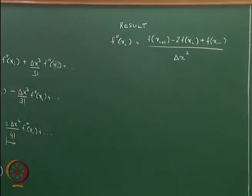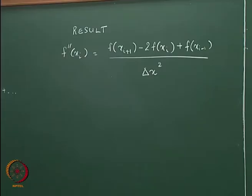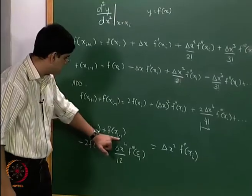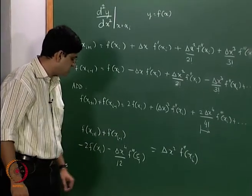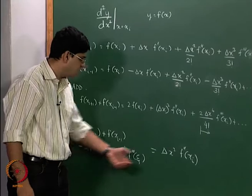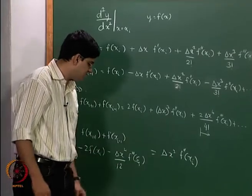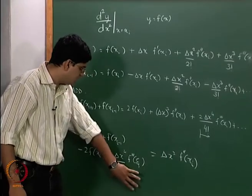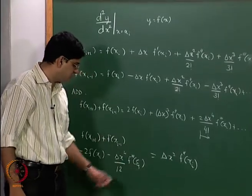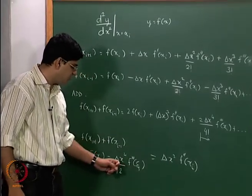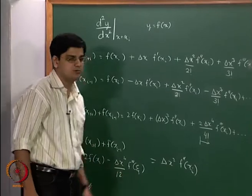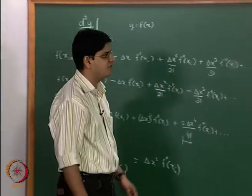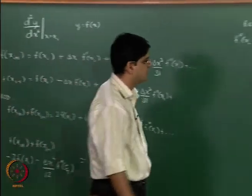So if you look at this expression, it is f(x(i+1)) plus f(x(i-1)) minus twice f(x(i)) divided by delta x squared, and the residual truncation error term is delta x squared by 12 multiplied by f four-dashes of zeta.